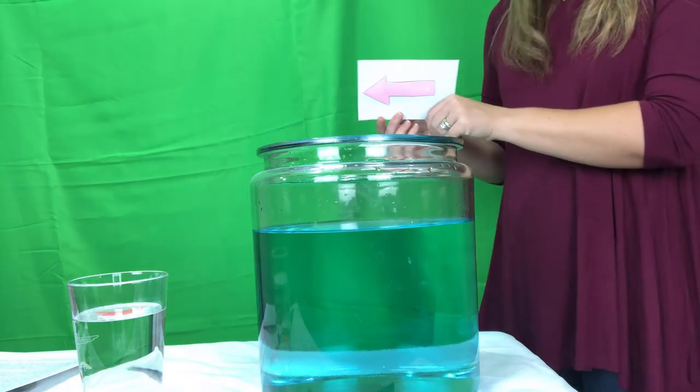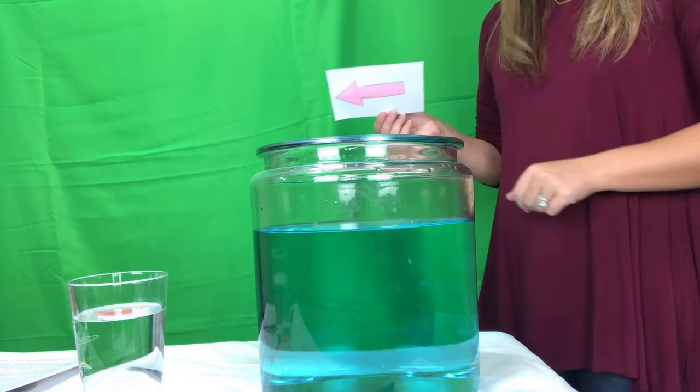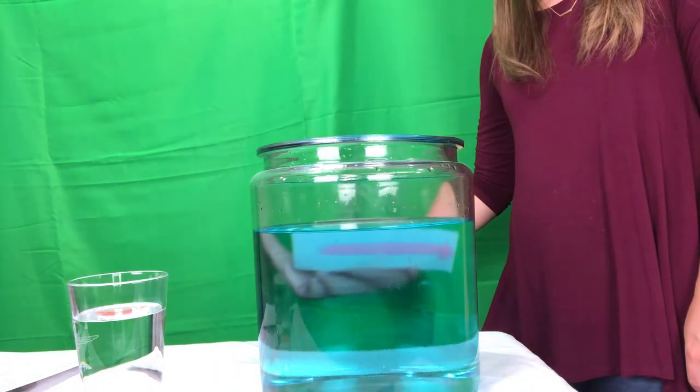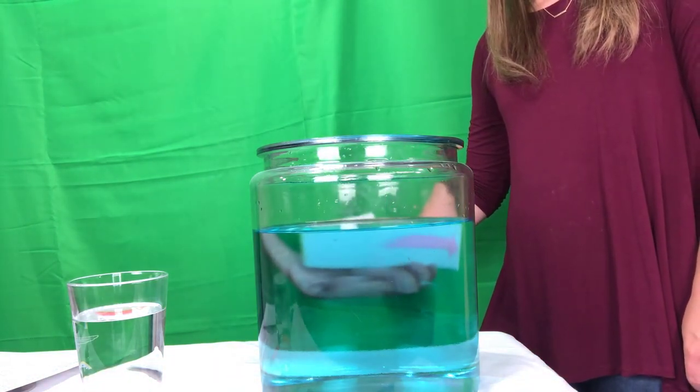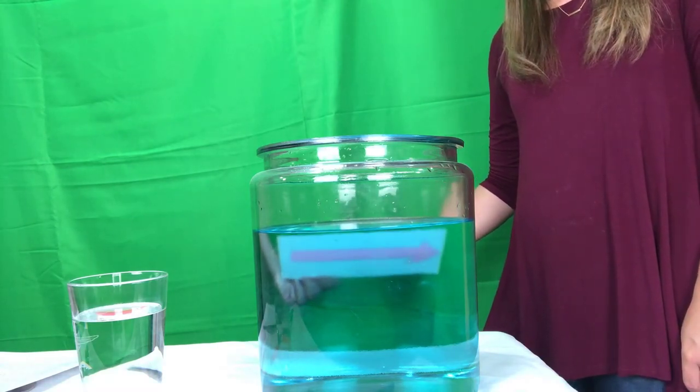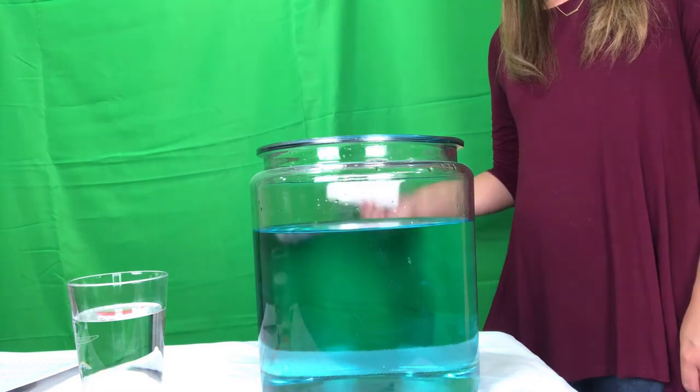Instead of spreading out in straight lines, the light changes direction both when it enters and leaves the glass of water. This change of direction is refraction and it happens because the light slows down as it enters the glass and speeds up again as it leaves.